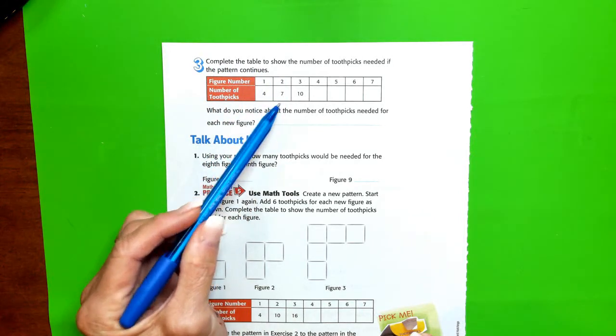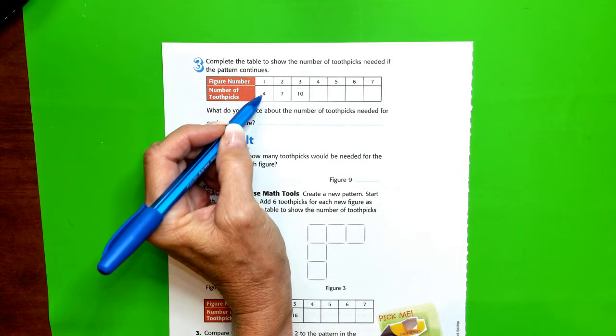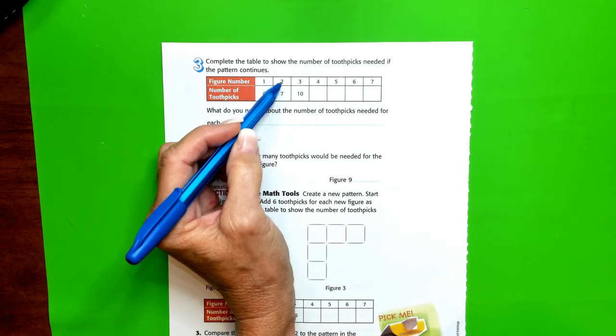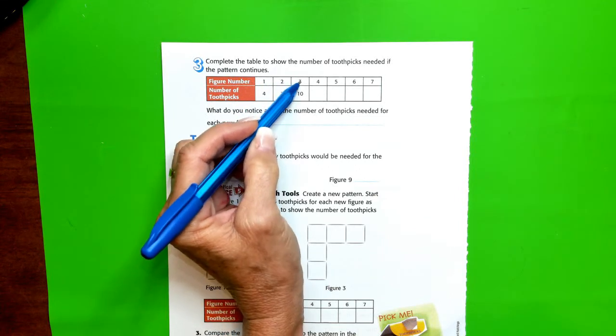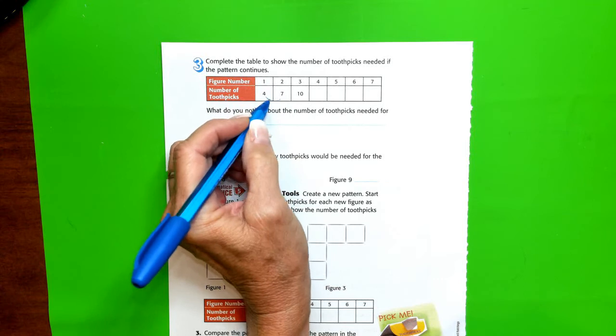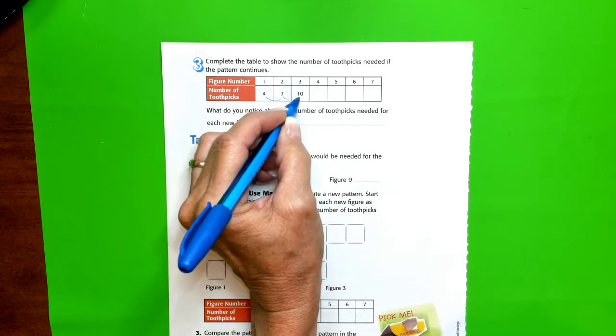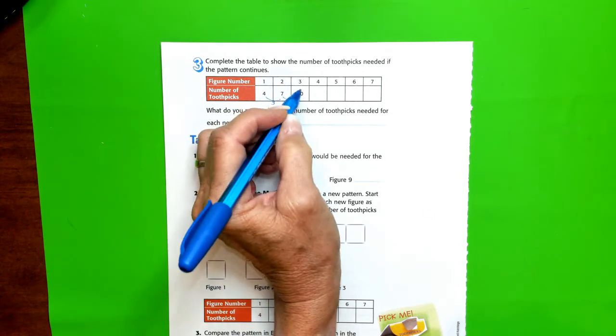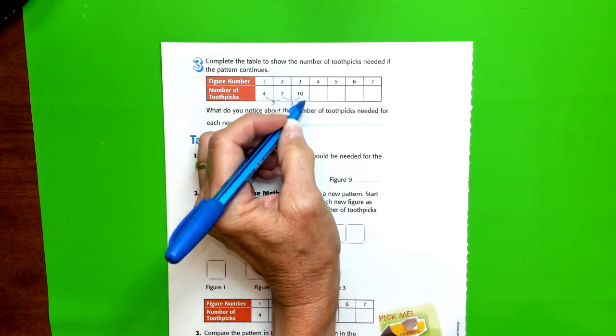Figure 1 had 4, Figure 2 had 7, Figure 3 had 10. How are these numbers changing? Do you see anything? Well, if you said that it changed by 3, you could be right. From the fourth figure we went from 10 to 13, didn't we?